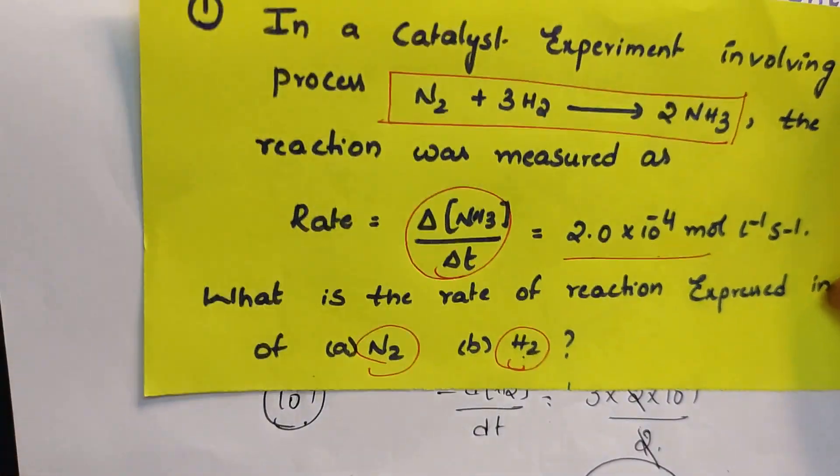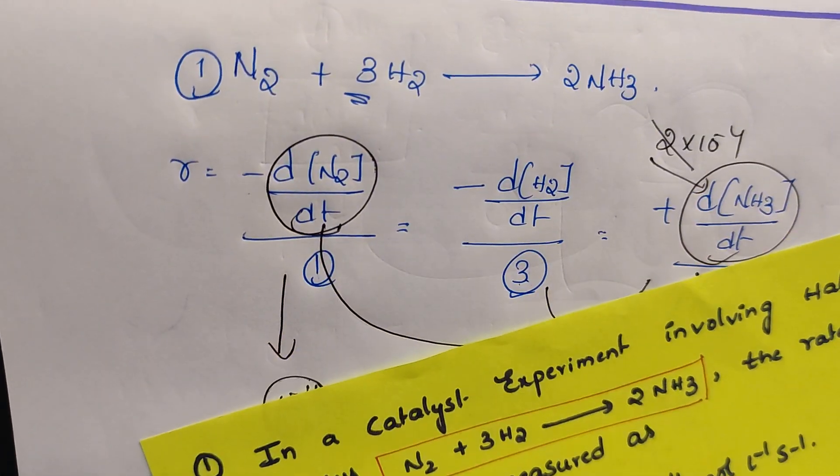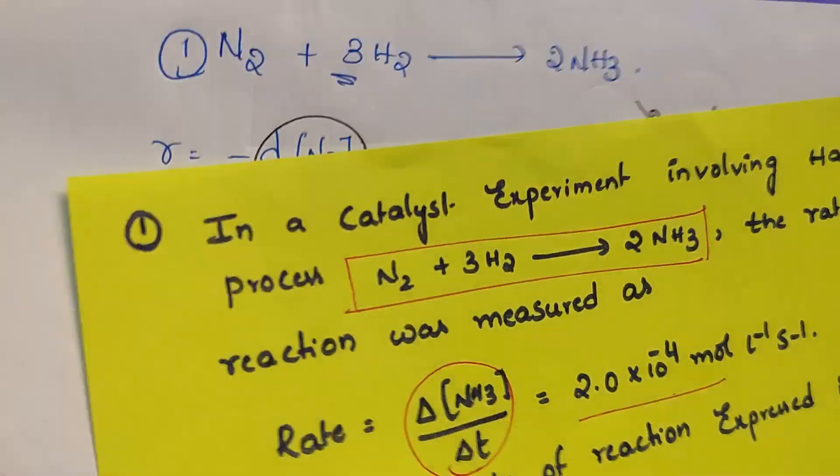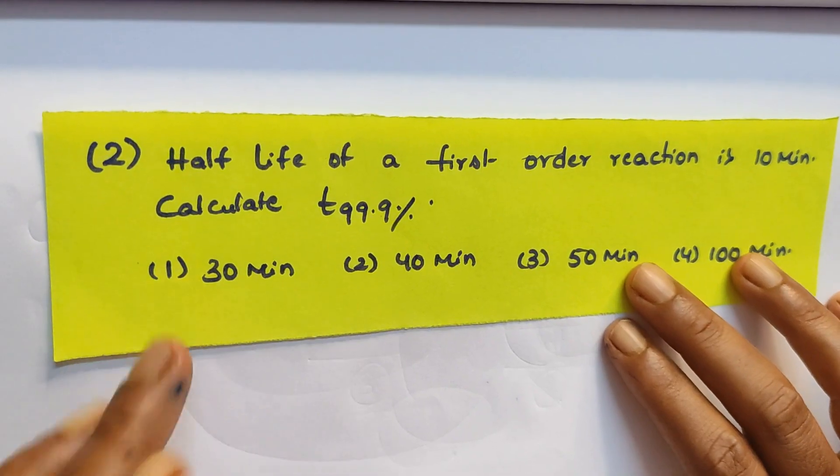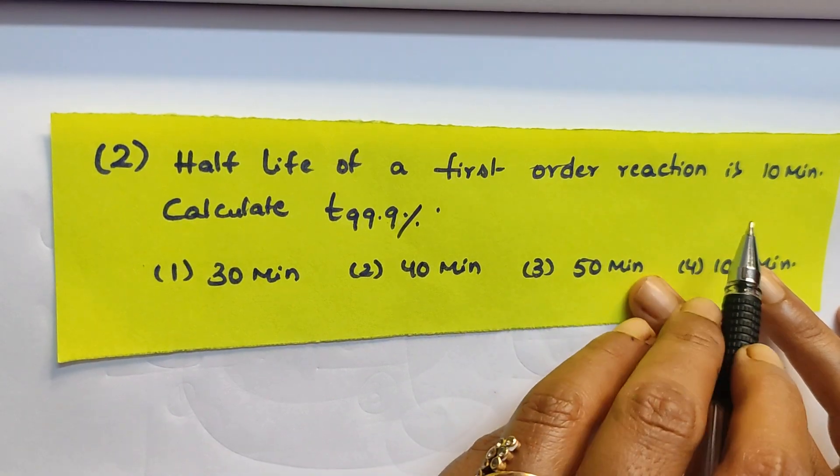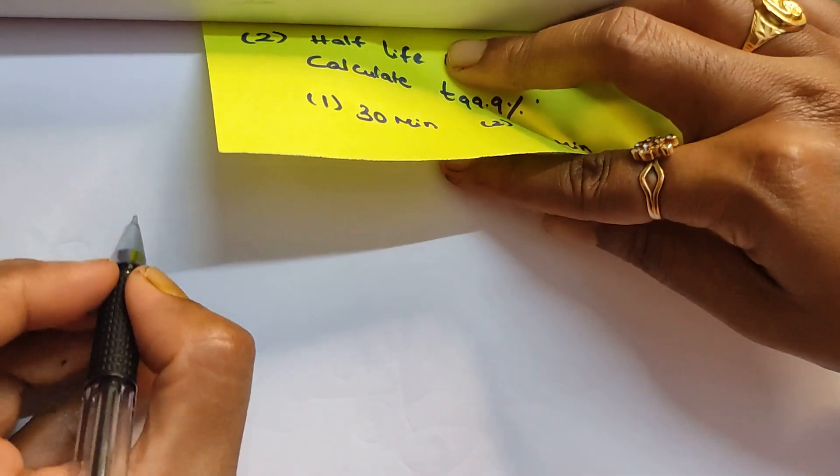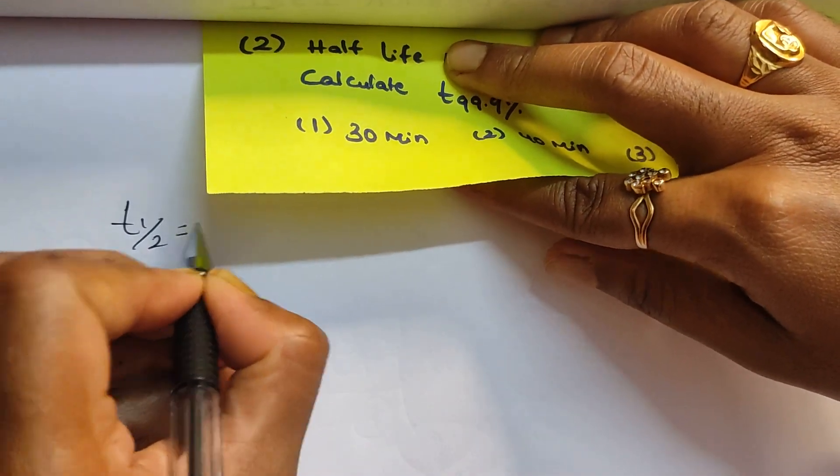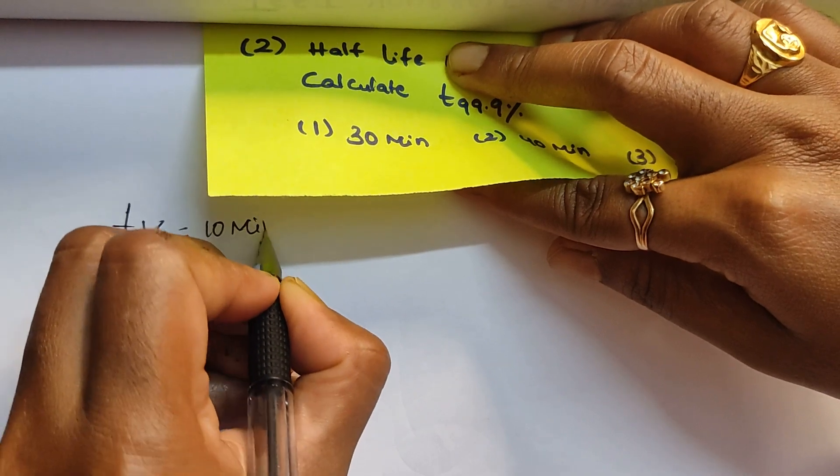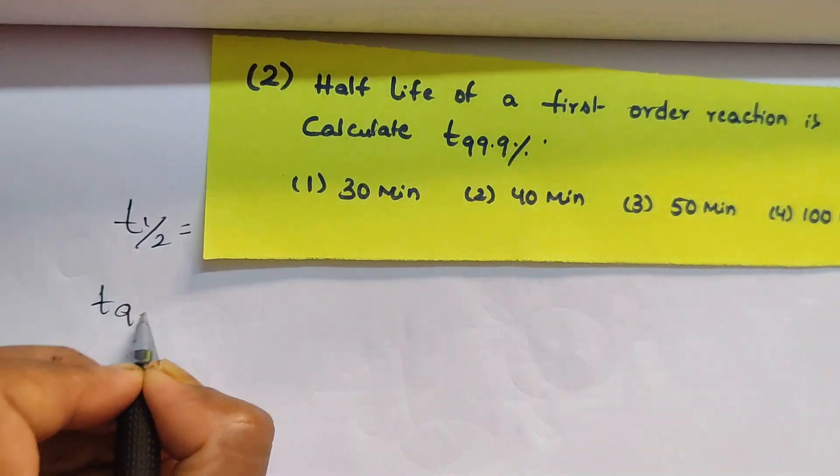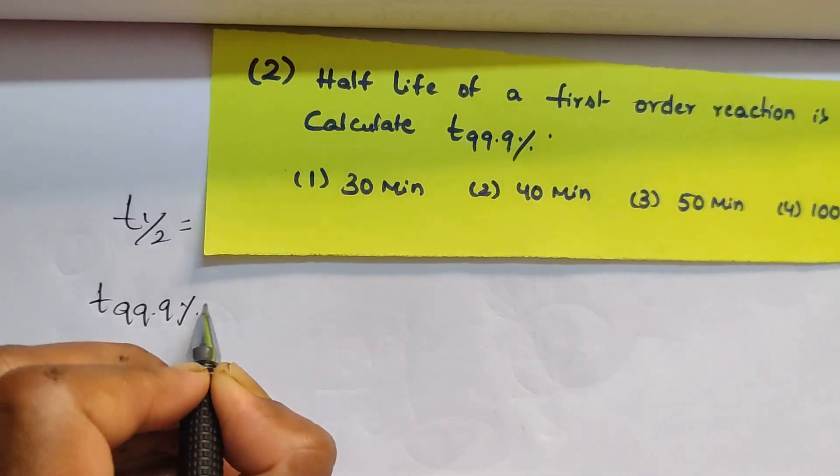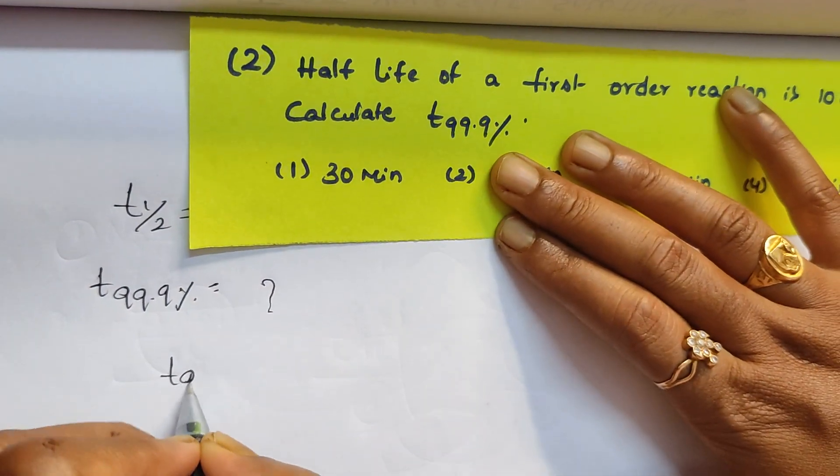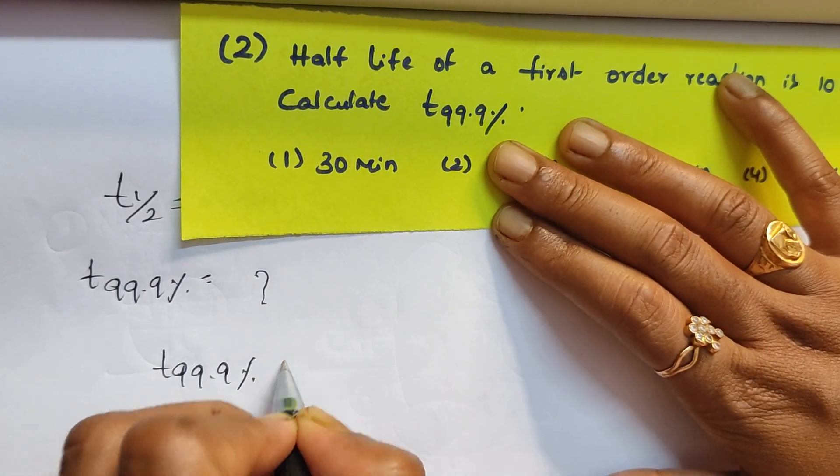Now coming to question number 2. Half life of a first order reaction is 10 minutes. t half is equal to 10 minutes. And they're asking us to find the t 99.9 percent.